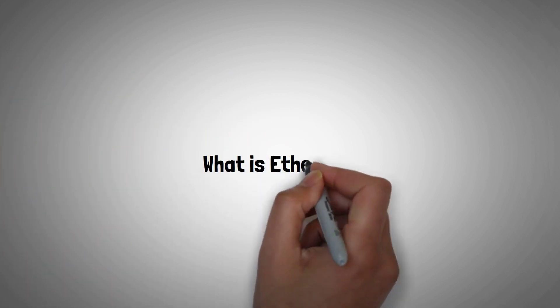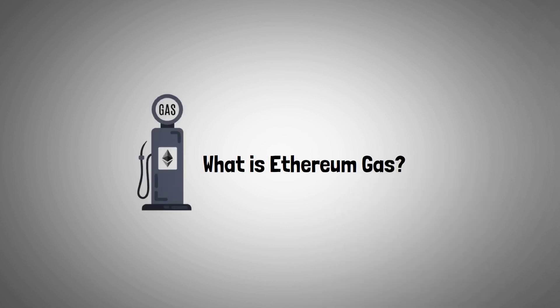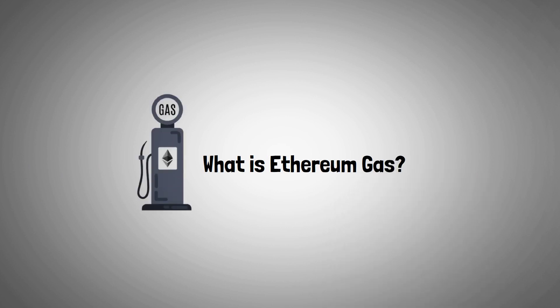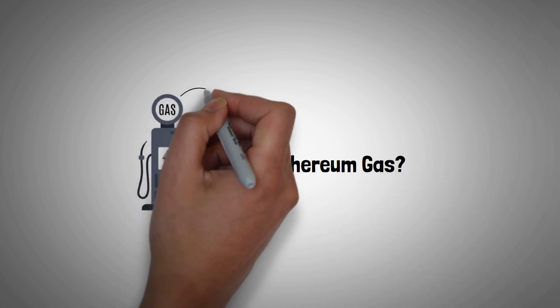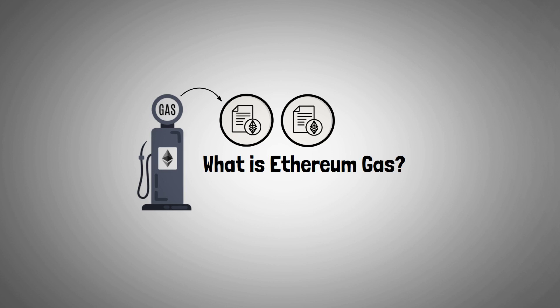First off, let's tackle the question: what is Ethereum gas? Ethereum gas is the fuel for the Ethereum blockchain. It's consumed when a smart contract, or a digital agreement, is executed. The more complex the contract, the more gas it consumes. When you send an Ethereum transaction, you must pay a transaction fee in gas.